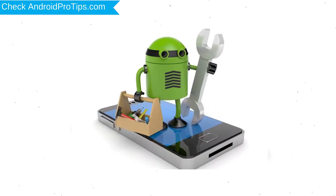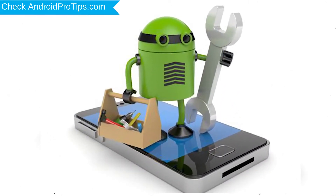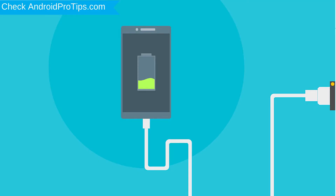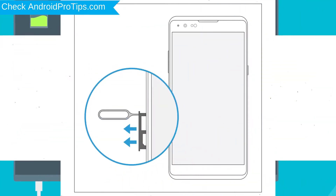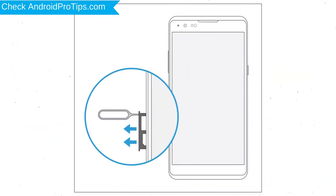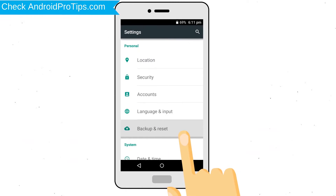Before resetting your mobile, your battery must be above 50%. Remove SD cards and SIMs. Back up your Android mobile data if possible.